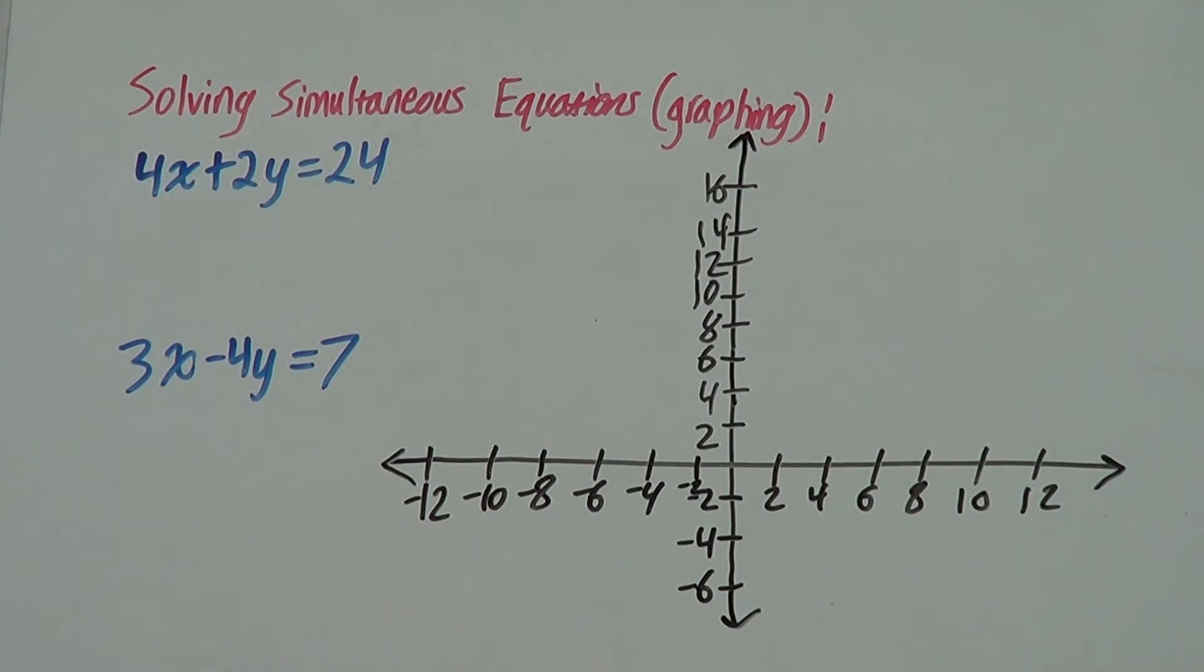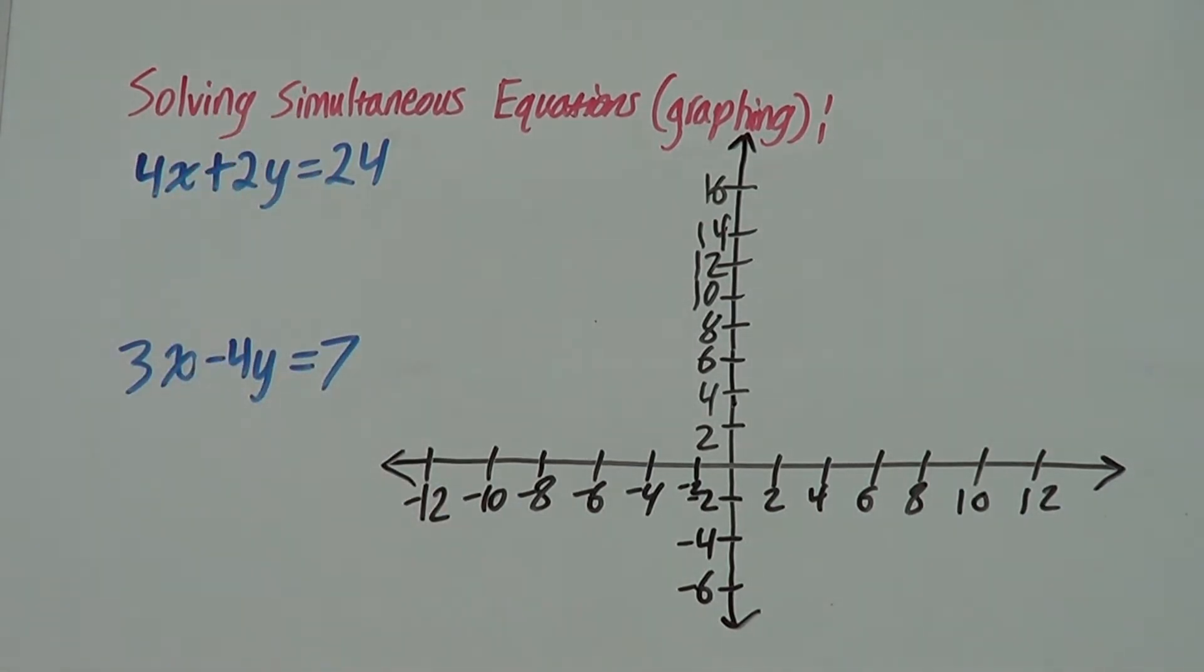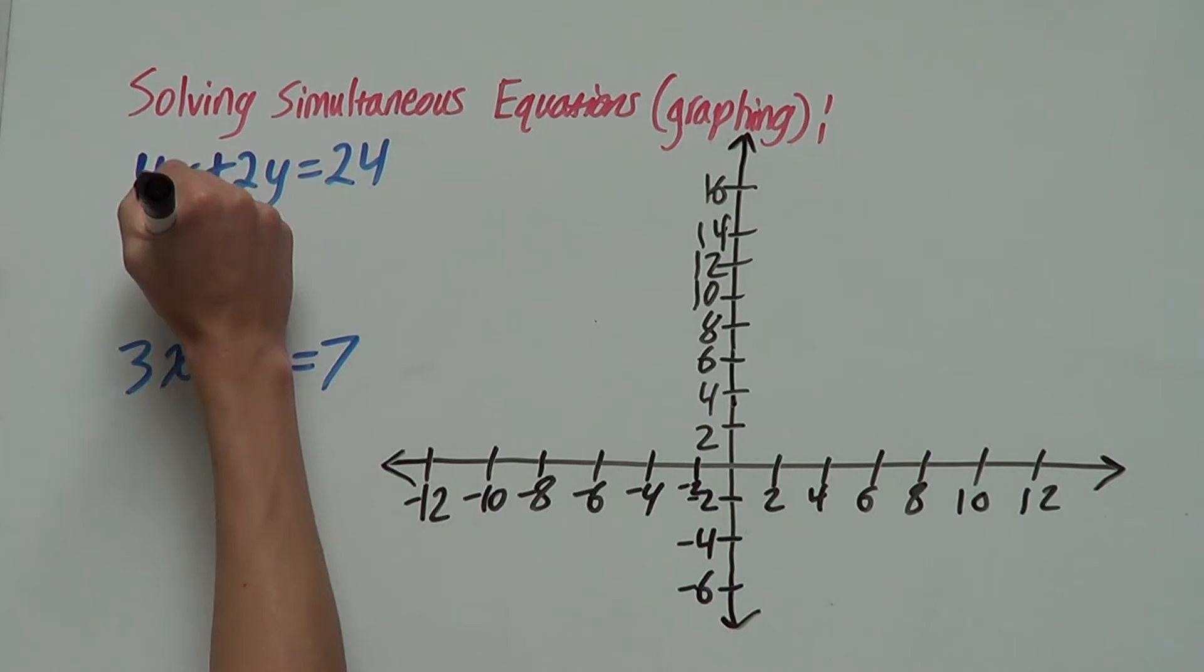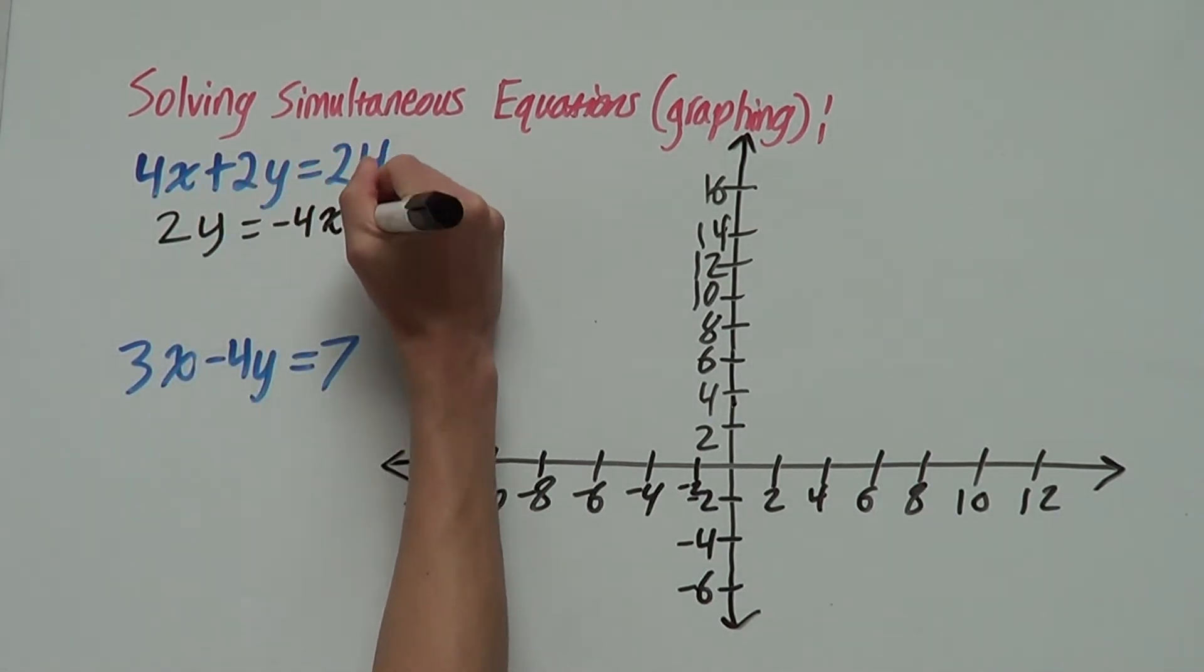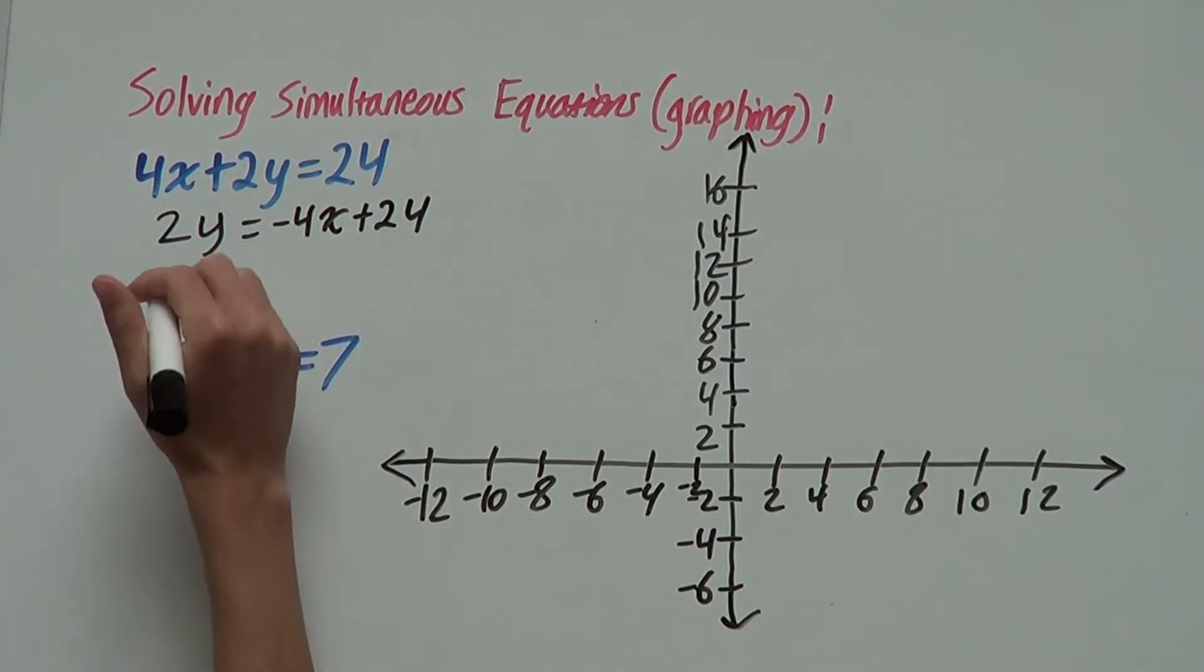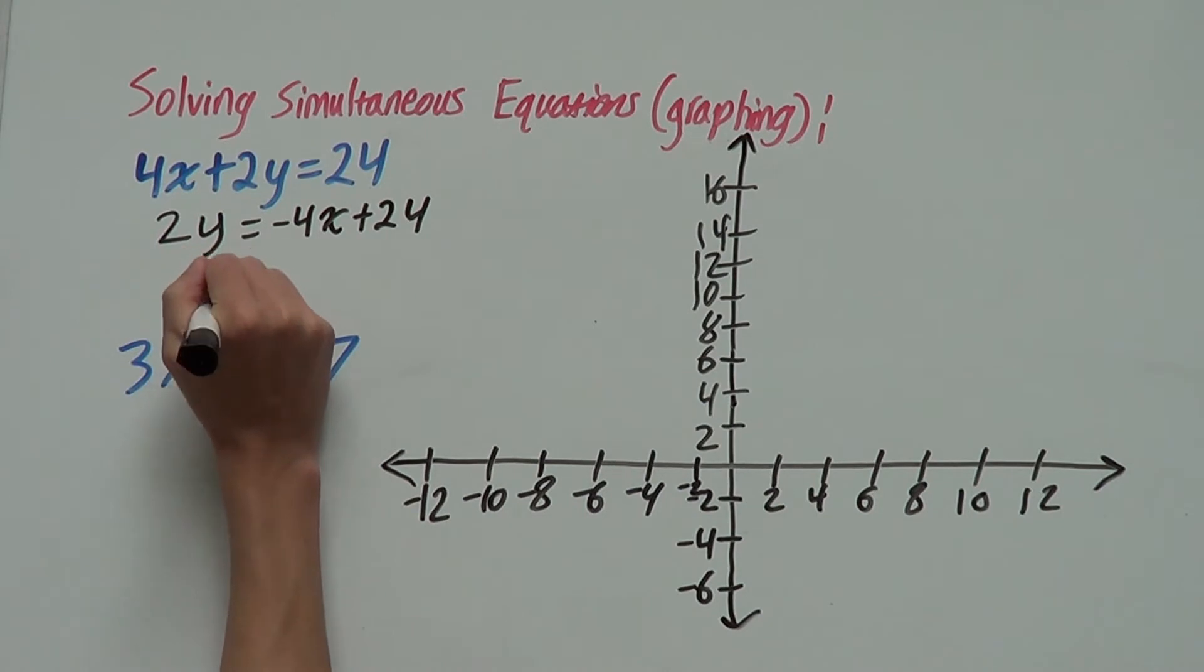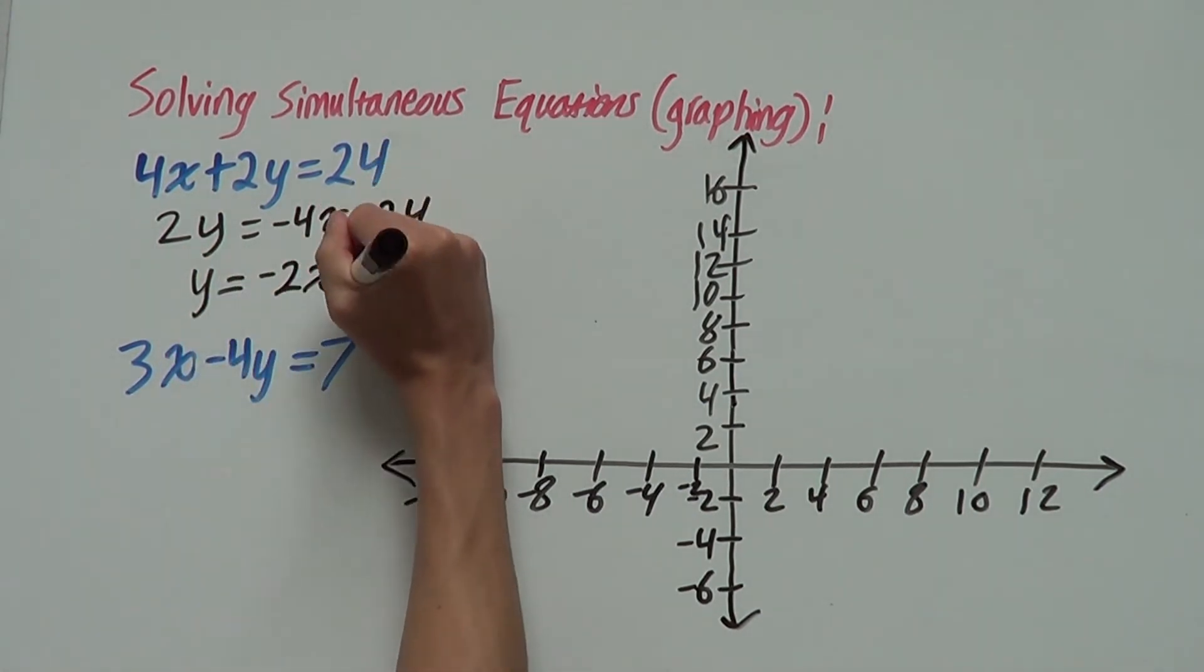So, let's look at this example. Let's get these into slope-intercept form, with y out the front. For this first one, subtract 4x from both sides to get 2y equals negative 4x plus 24, and divide everything by 2 to get y equals negative 2x plus 12.